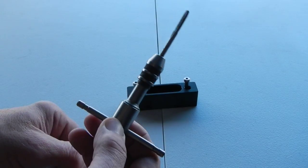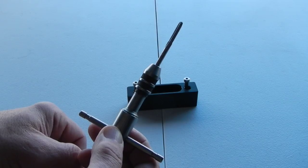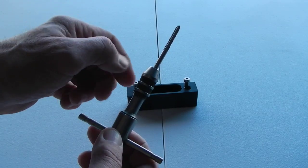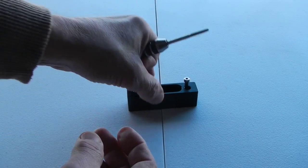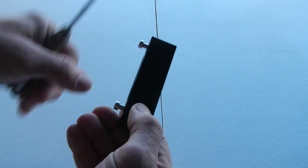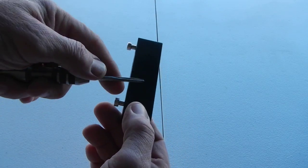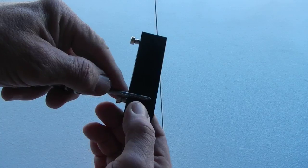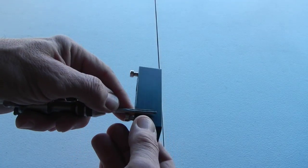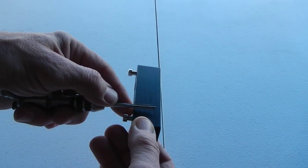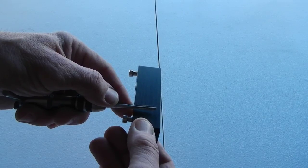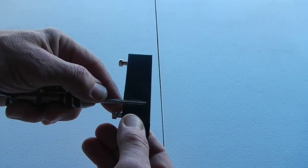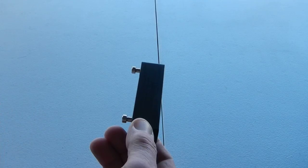I took an 8-32 tap. Now these are rather small, you want to be careful when you're doing this. Then I just chased the hole deeper. I went in to there. I went in that far with it, just past the threads. As you can see, it won't go all the way through, but there's no need to.